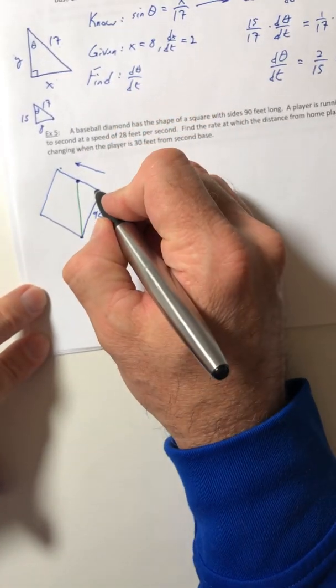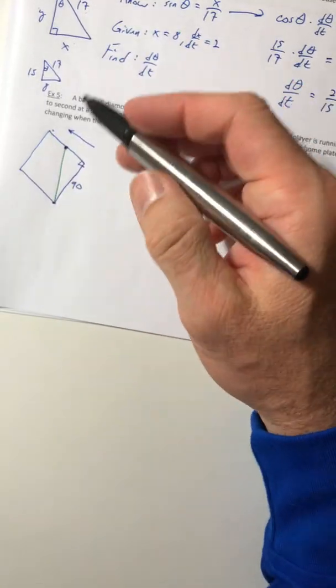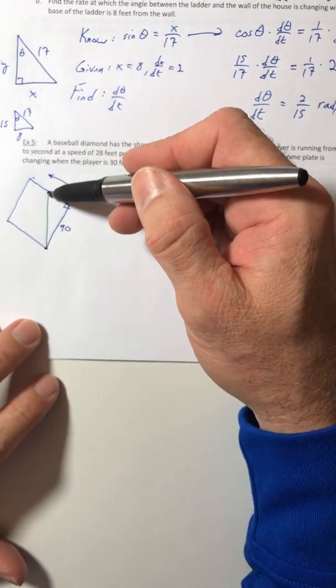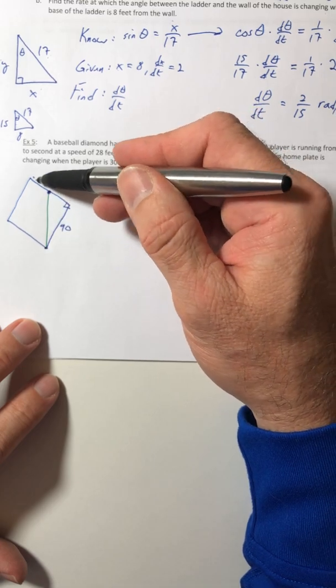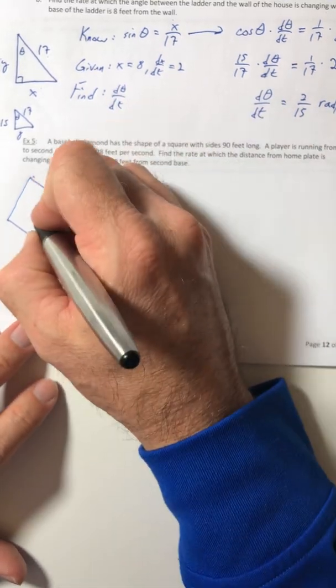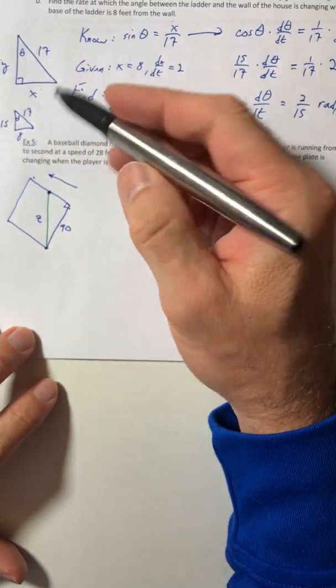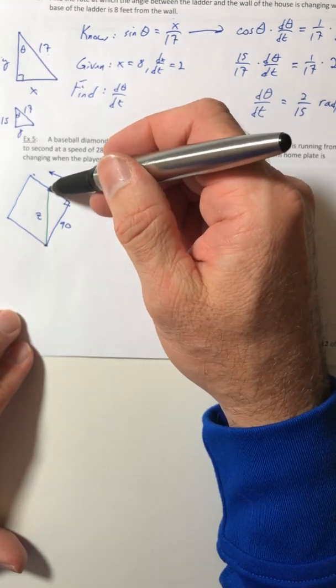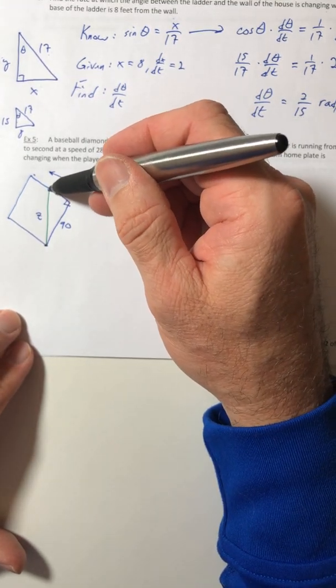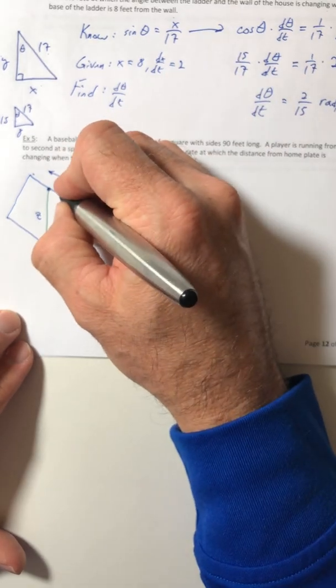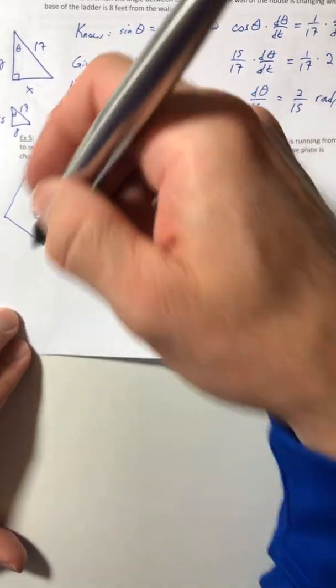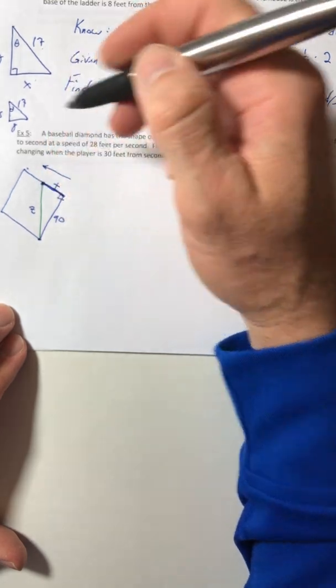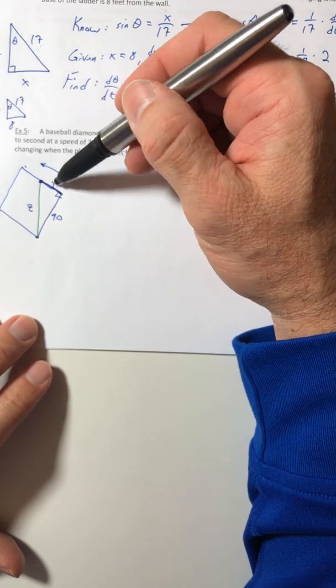So I have another right triangle where the green side would be your hypotenuse. This green side is getting longer as he runs to second. So that green line is changing. So I have to label it with a variable, I'm going to use Z. And then this length over here, that's also changing because he's getting further away from first base. So that length from first base to the player, that's the X. The whole thing is 90, but just this part is X.